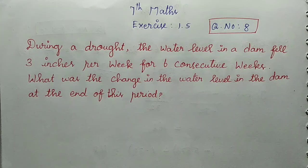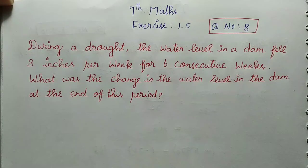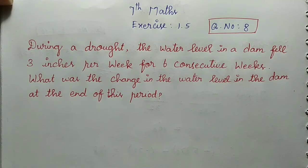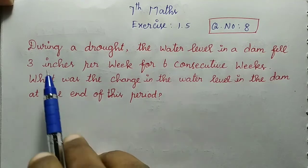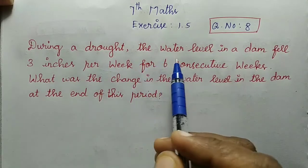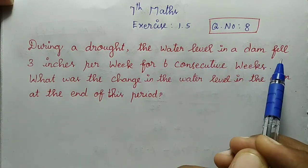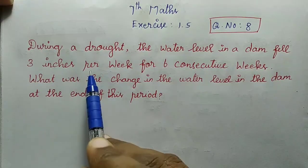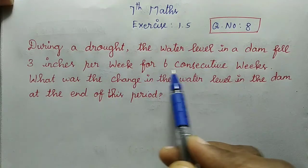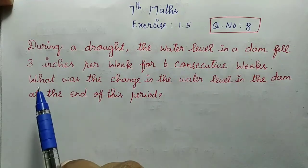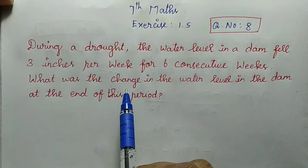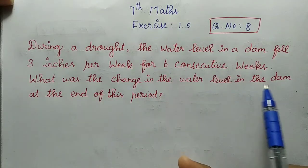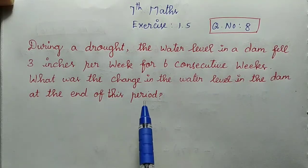Hello friends, welcome to VM Nutrition Channel. In this channel, 7th Standard Math Term 1, Exercise 1.5, Question Number 8: During a drought, the water level in a dam fell 3 inches per week for 6 consecutive weeks. What was the change in the water level in the dam at the end of this period?